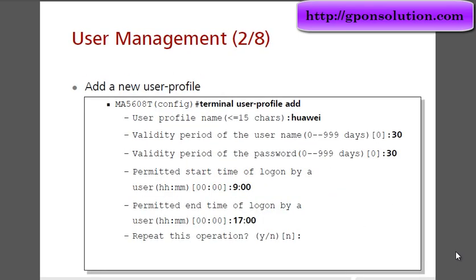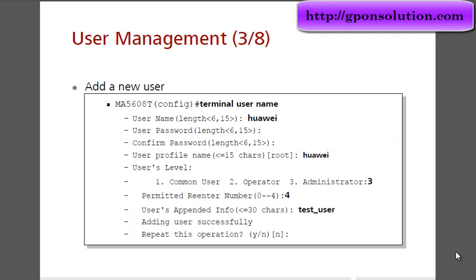The user profile name is Huawei — this is the profile we created before. The user level is 3, which is administrator level. The permitted re-enter number is 4, and the appended info is set to 'test user'. The user is created successfully.